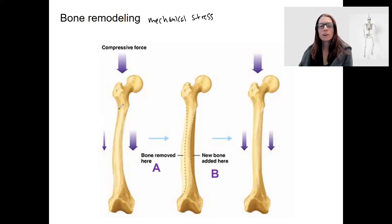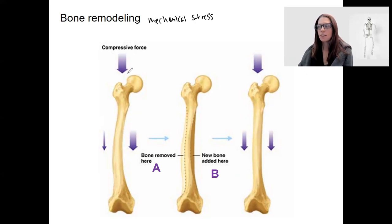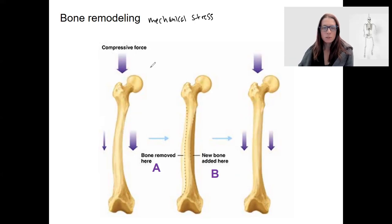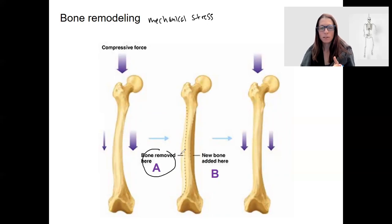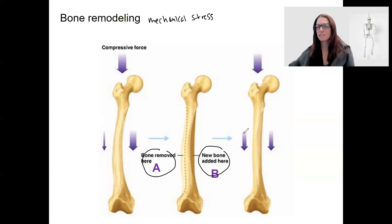Based on where compressive forces occur, where the stress is greatest, that will stimulate bone growth and bone removal. This is showing over time, based on where the force is coming from, how the bone can adapt to remove bone here and add bone here, to now have that force be better distributed along those compact pieces of the diaphysis.